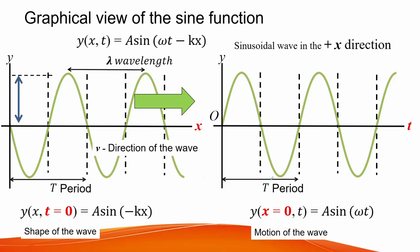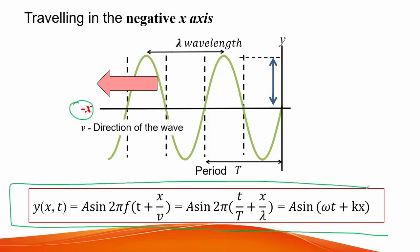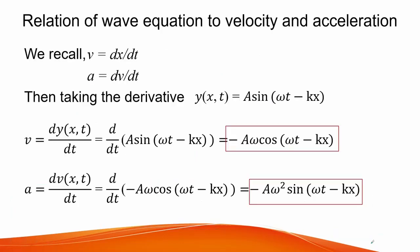Graphing the sine function with t equals zero and displacement x equals zero, we see that the wave's motion is initiated going downwards. Both waves represent motion towards the positive x-axis. For motion towards the negative x-axis, the sine function is expressed as the sum of angular frequency times t plus wave number times displacement x. With the wave function, we can write velocity and acceleration by taking the first and second derivatives.